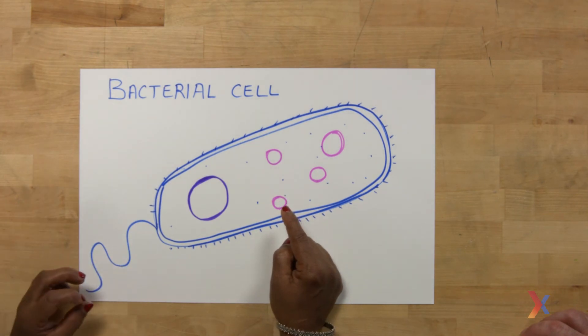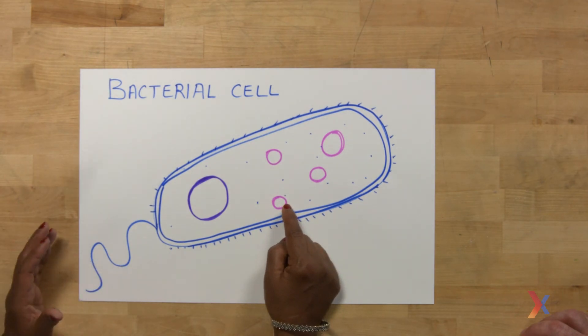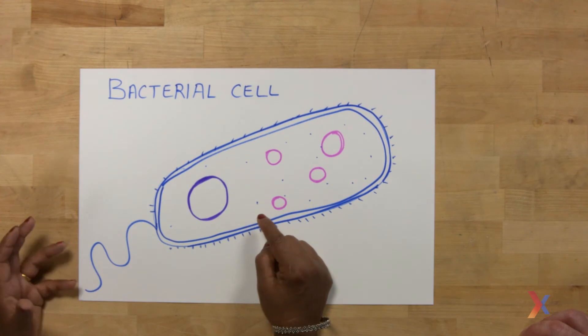Now, plasmids vary in size. They can be a few genes to several hundred genes. And each of these genes, in turn, carry specific traits, which they then confer upon the cell that holds them.